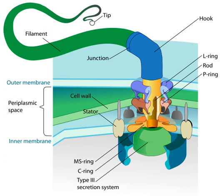Eukaryotic flagella are structurally identical to eukaryotic cilia, although distinctions are sometimes made according to function or length. Fimbriae and pili are also thin appendages, but have different functions and are usually smaller.